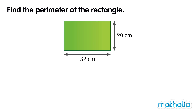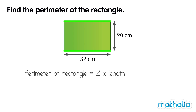Let's find the perimeter of this rectangle. The opposite sides of a rectangle are equal, so the perimeter of a rectangle is equal to 2 times the length plus 2 times the breadth.